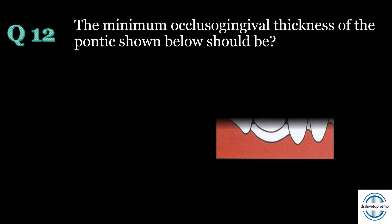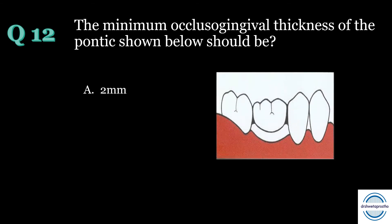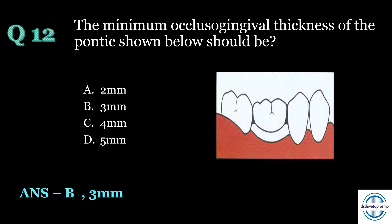Question number twelve: The minimum occlusal-gingival thickness of the pontic should be — A) 2 mm, B) 3 mm, C) 4 mm, or D) 5 mm? The answer is B — 3 mm. This is a picture of a sanitary or hygienic pontic, which is a non-mucosal contact pontic. At least 2 mm above the residual ridge should be present for adequate space for cleaning. The minimum thickness of this pontic should be 3 mm for adequate strength.